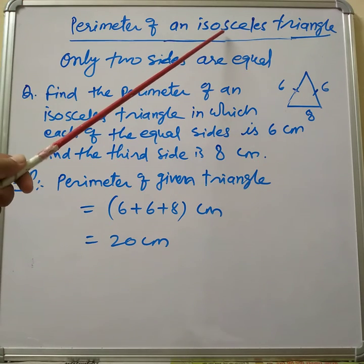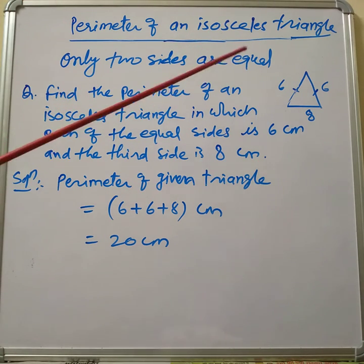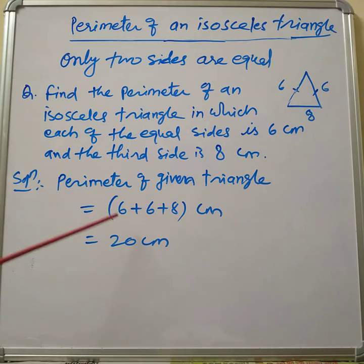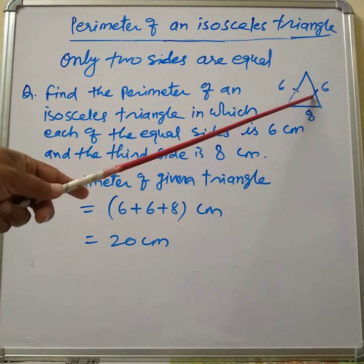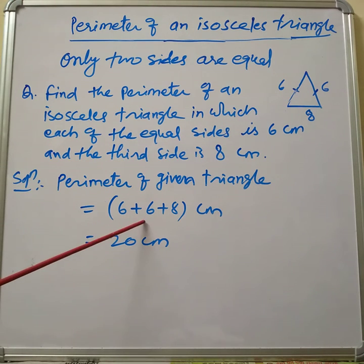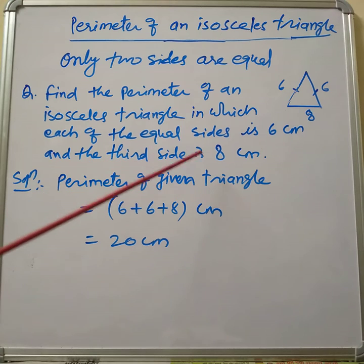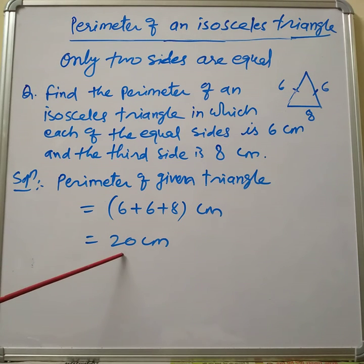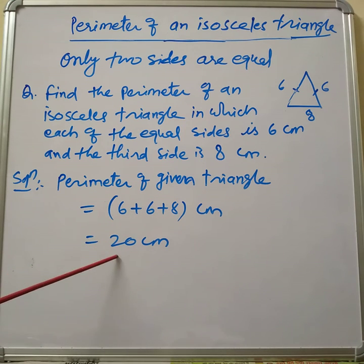So how do we find the perimeter of the given triangle? Perimeter equals one side of six centimeters, plus the other equal side of six centimeters, plus the third side of eight centimeters. Six plus six plus eight: six plus six is twelve, twelve plus eight is twenty centimeters.